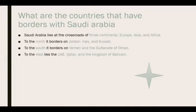What are the countries that have borders with Saudi Arabia? Saudi Arabia lies at the crossroads of three continents: Europe, Asia, and Africa. To the north, it borders Jordan, Iraq, and Kuwait.